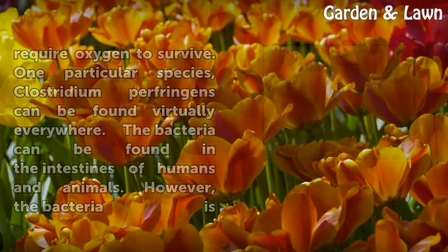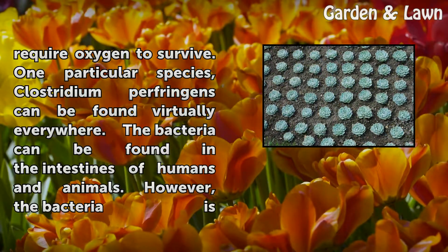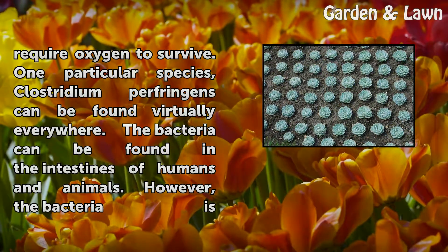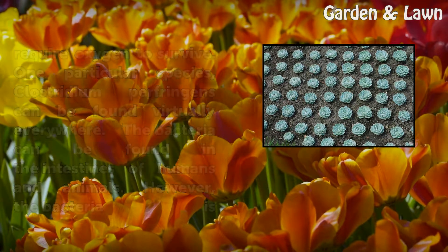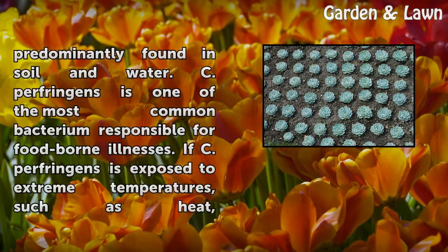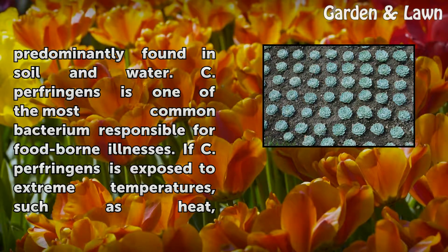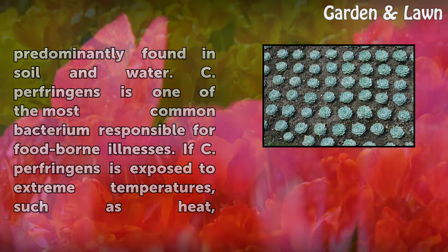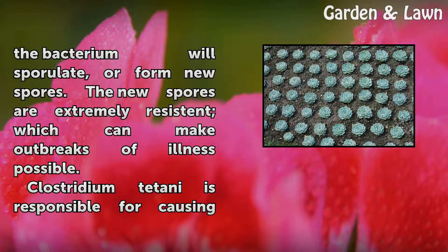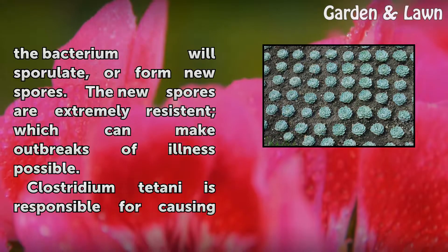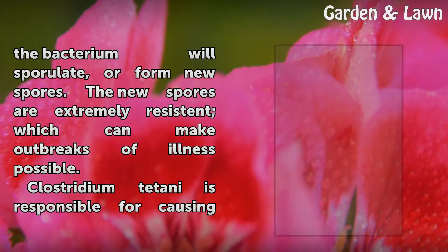Anaerobic bacteria don't require oxygen to survive. One particular species, Clostridium perfringens, can be found virtually everywhere. The bacteria can be found in the intestines of humans and animals; however, it is predominantly found in soil and water. C. perfringens is one of the most common bacterium responsible for foodborne illnesses. If C. perfringens is exposed to extreme temperatures, such as heat, the bacterium will sporulate or form new spores. The new spores are extremely resistant, which can make outbreaks of illness possible.